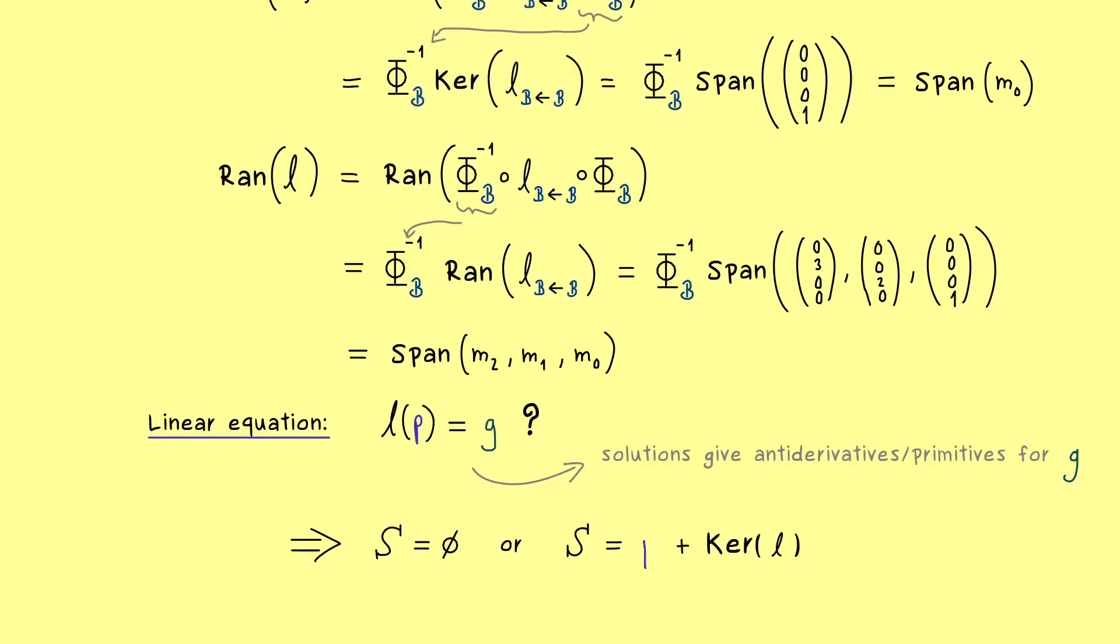And in the second case we just need a particular solution which we could call P tilde. This means here P tilde prime is equal to G. This means if we find one antiderivative of G then we immediately have infinitely many. However we also see that the difference between two antiderivatives is always a constant. Indeed the kernel is just one dimensional and spanned by all the constants. This one is an important result from analysis but now we have proven it in a linear algebra setting.